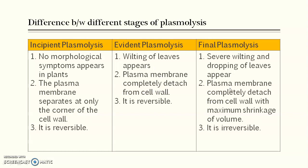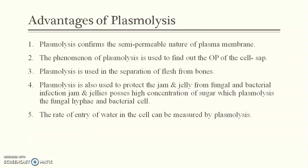In incipient plasmolysis, plasma membranes separate only at corners. In evident plasmolysis, plasma membranes are completely detached from the cell wall. In final plasmolysis, it forms a round shape in the center — maximum shrinkage. Incipient and evident plasmolysis are reversible; if placed in hypotonic solution, the cell regains its shape. But if the cell is completely plasmolyzed, it is irreversible, leading to severe and permanent wilting and dropping of leaves.